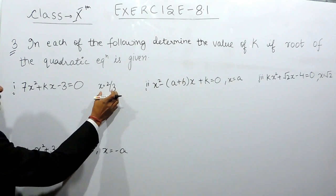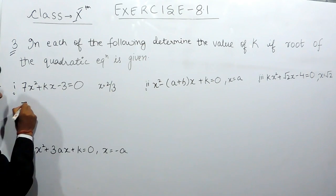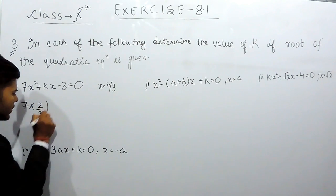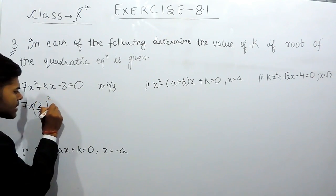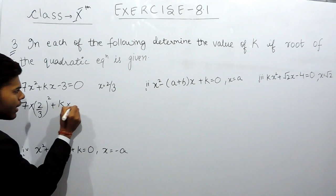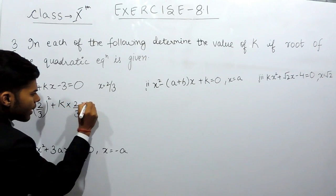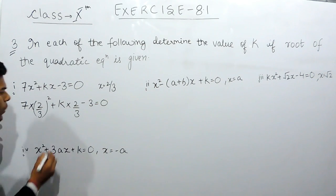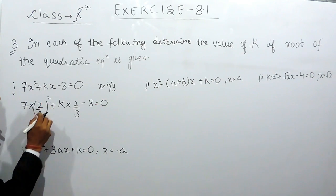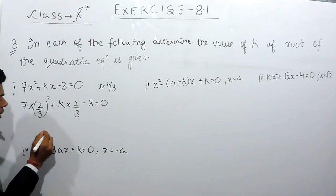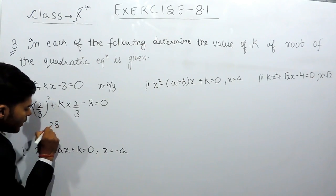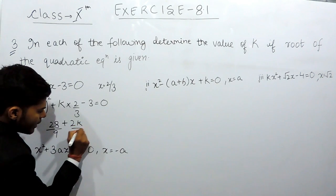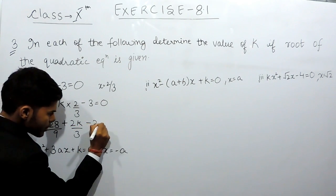On keeping x equals to 2 by 3 in this equation: 7 multiplied by the whole square of 2 by 3, plus k multiplied by 2 by 3, minus 3 equals to 0. That will be equals to 2 square is 4, and 7 multiplied by 4, that is 28 by 9, plus 2k by 3, minus 3 equals to 0.